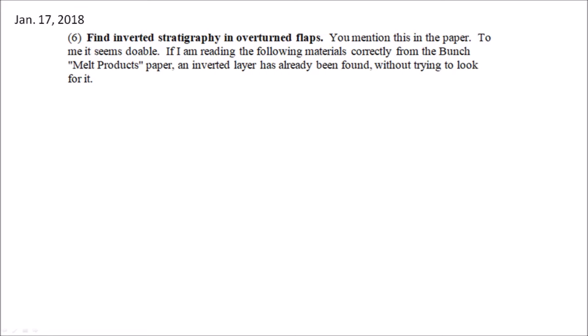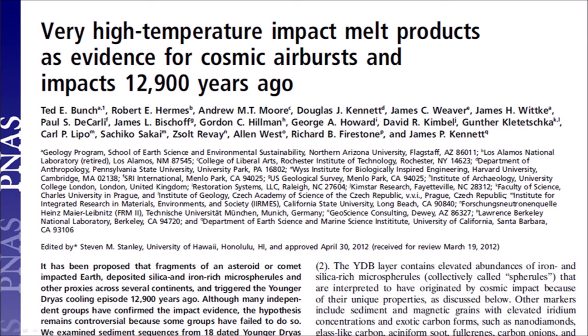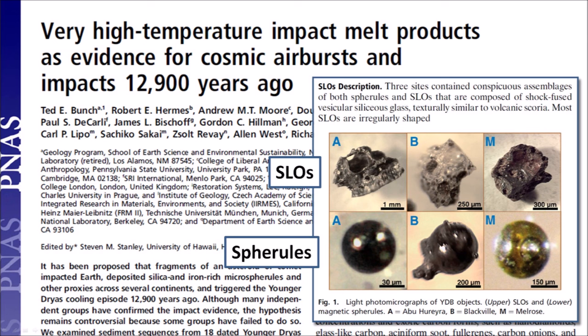Adam was referring to the paper by Ted Bunch and 17 co-authors published in 2012 with the title "Very High Temperature Impact Melt Products as Evidence for Cosmic Airbursts and Impacts 12,900 Years Ago." The paper describes SLOs, which are siliceous scoria-like objects, and spherules. Both SLOs and spherules are composed of shock-fused vesicular siliceous glass, which is texturally similar to volcanic scoria. The SLOs are irregularly shaped.